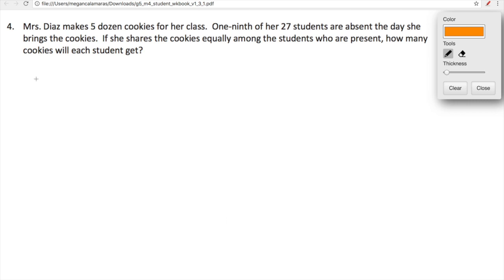Let's just look at one more problem here. It involves cookies and kids. Mrs. Diaz makes five dozen cookies for her class. We're reading the problem before we start any calculations. Do not just pull random numbers out of the problem and start dividing or multiplying them. Let's read the problem and understand it before we start blindly calculating. Mrs. Diaz makes five dozen cookies for her class. One ninth of her 27 students are absent the day she brings the cookies. If she shares the cookies equally among the students who are present, how many cookies will each student get?